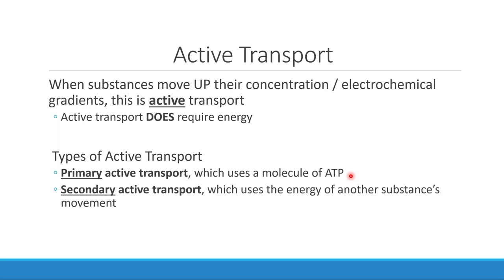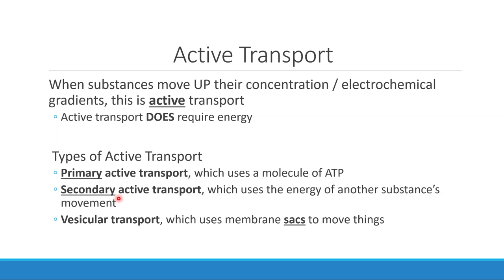We can also do what I like to think of as piggybacking. In secondary active transport, one molecule is moving down its concentration gradient, which allows another molecule to move up its concentration gradient. One other kind of active transport that doesn't move things in exactly the same way but still requires energy is called vesicular transport. In vesicular transport, we use vesicles — little membrane bubbles or membrane sacs — to move things into or out of the cell.